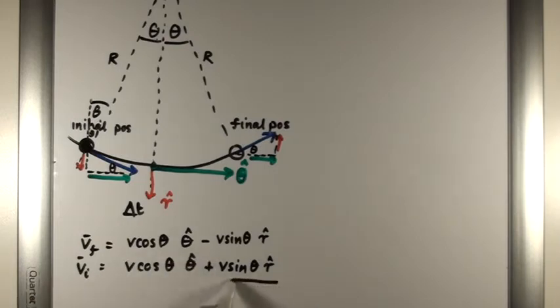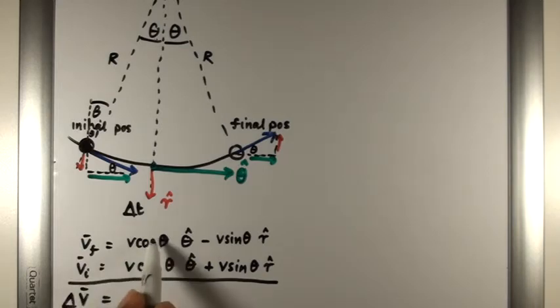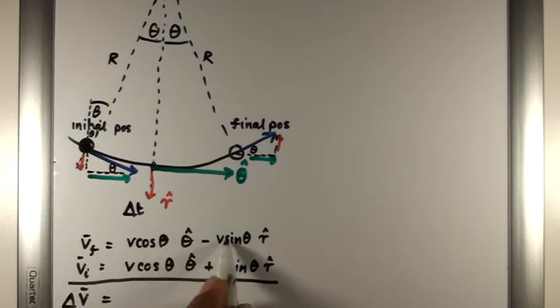When we subtract these two vectors to determine what delta V is, we find that the terms in the tangential direction cancel, and in the radial direction we get minus 2V sine theta in the radial direction.